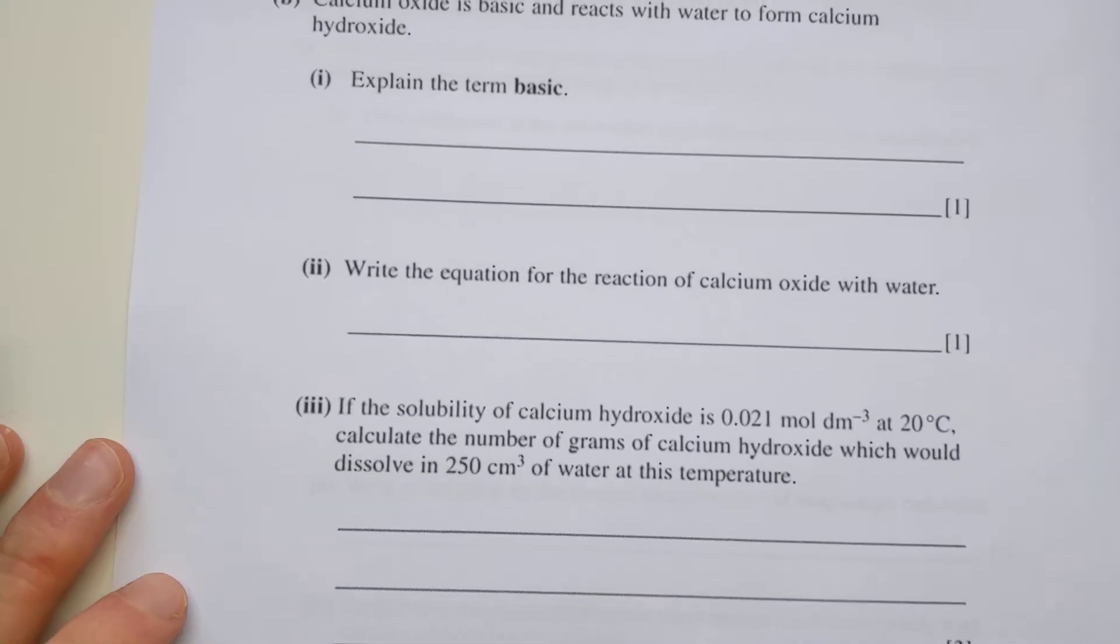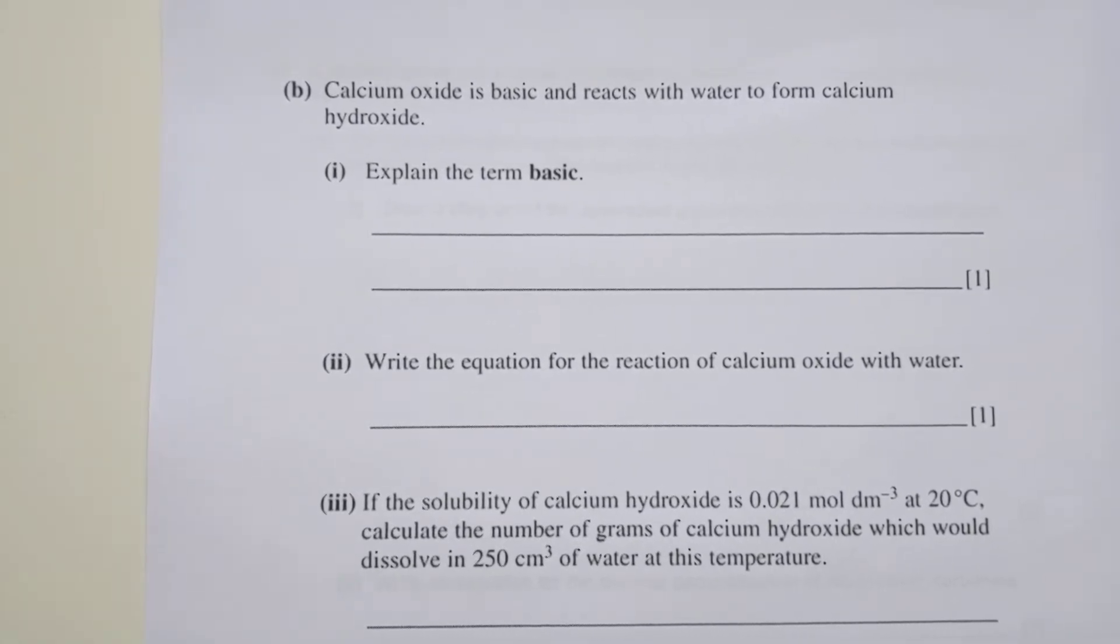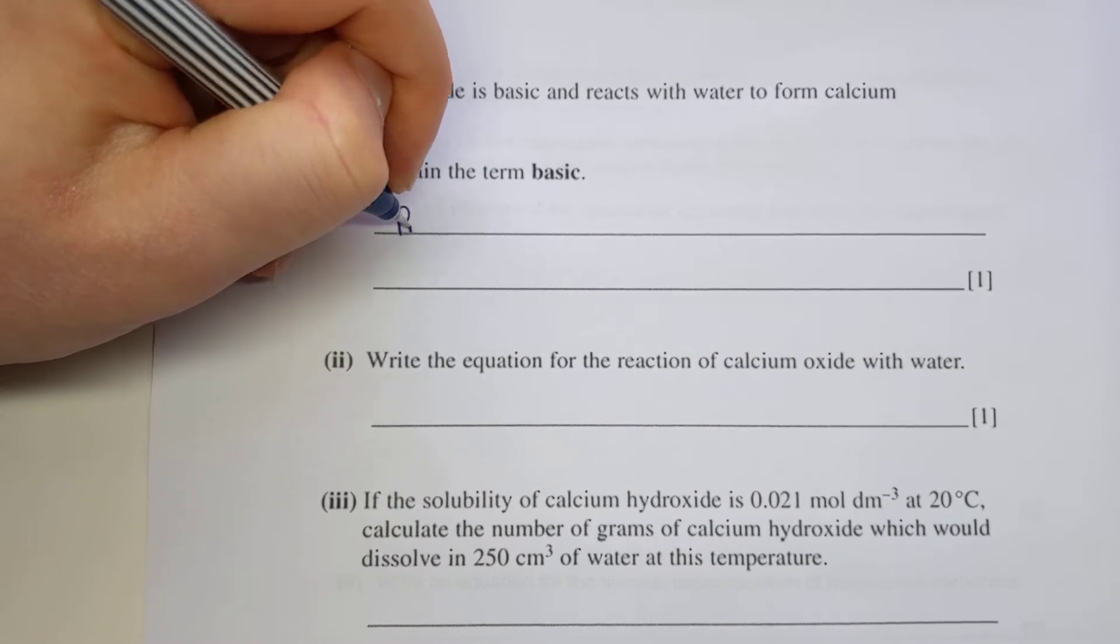The second question moves on to more about the reactivity of the Group 2 metals and the nature of their compounds. It tells you about calcium oxide - it's basic and reacts with water to form calcium hydroxide. First part is explaining the term basic.